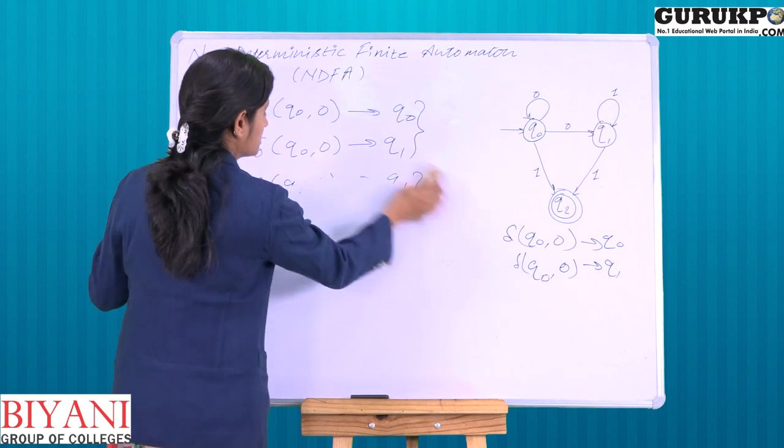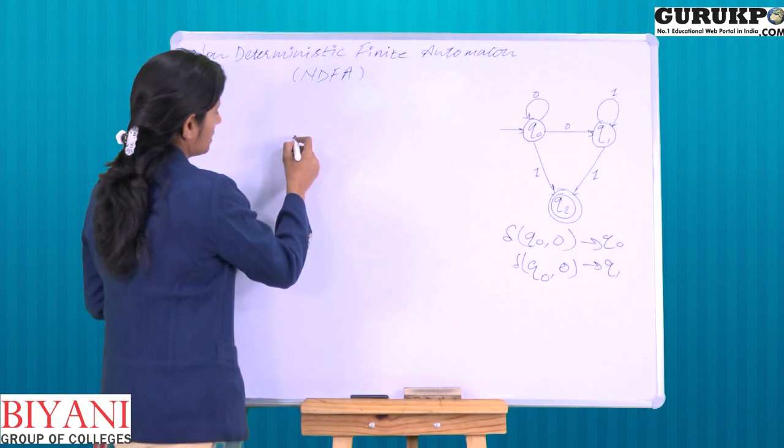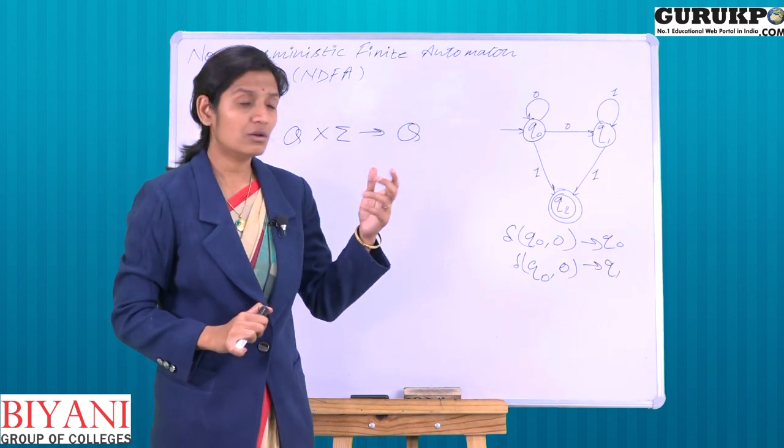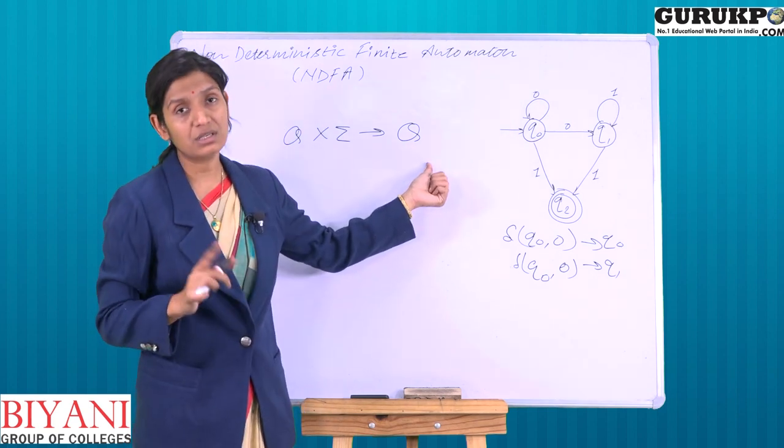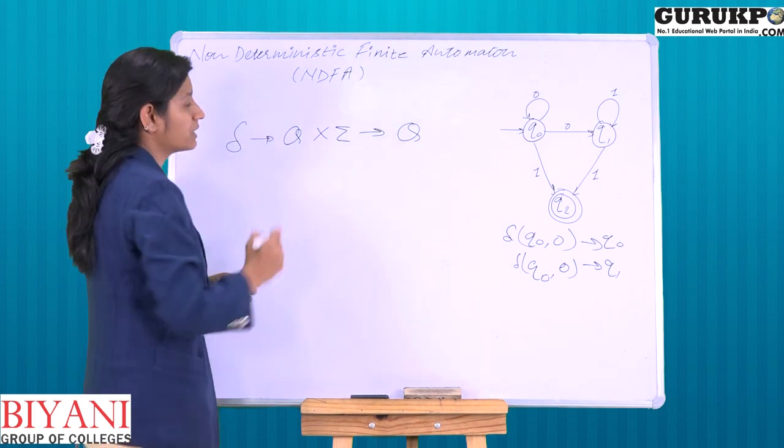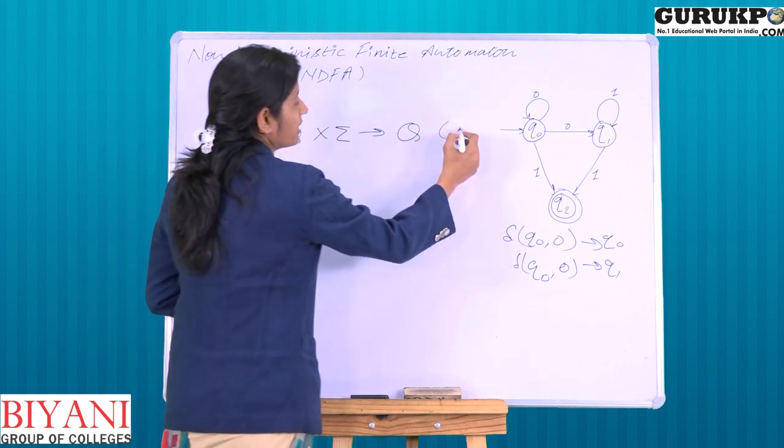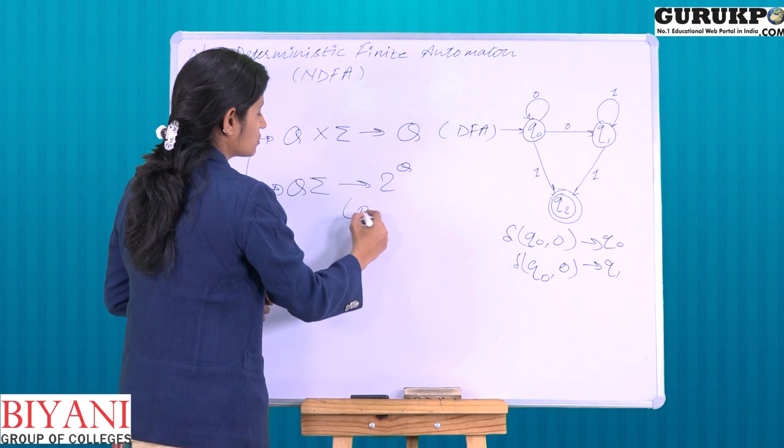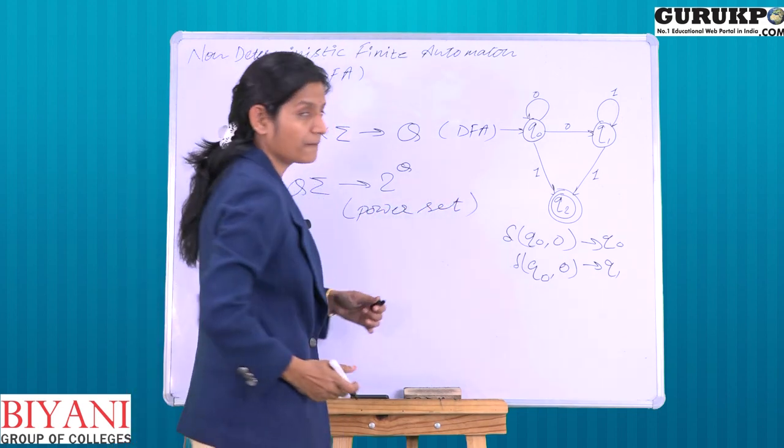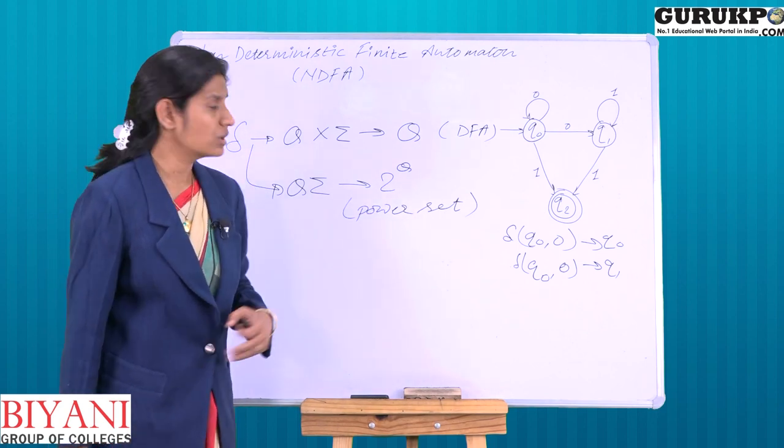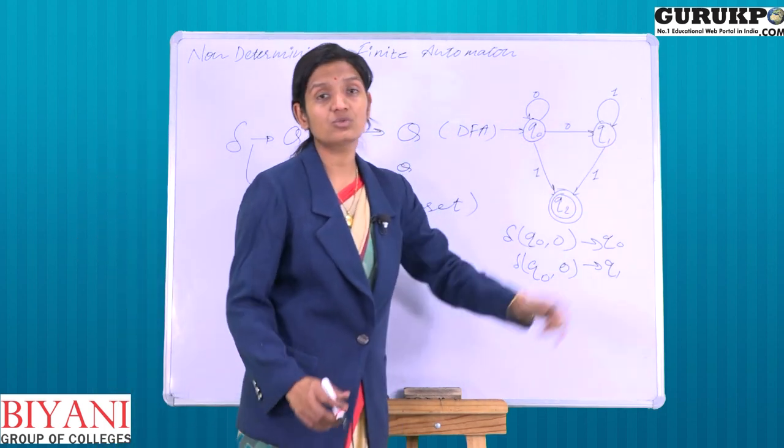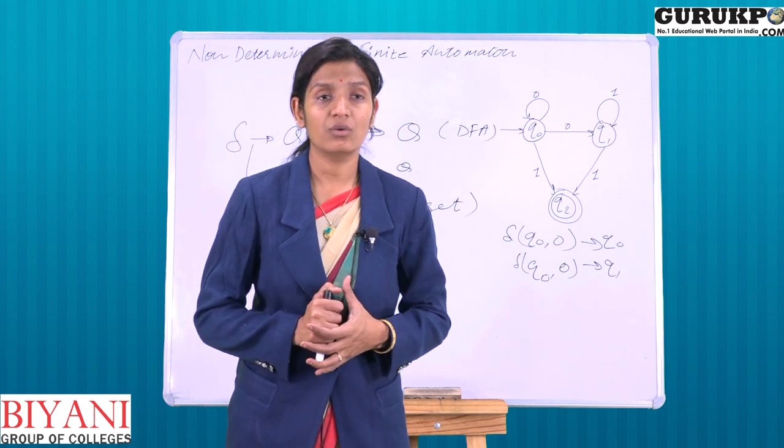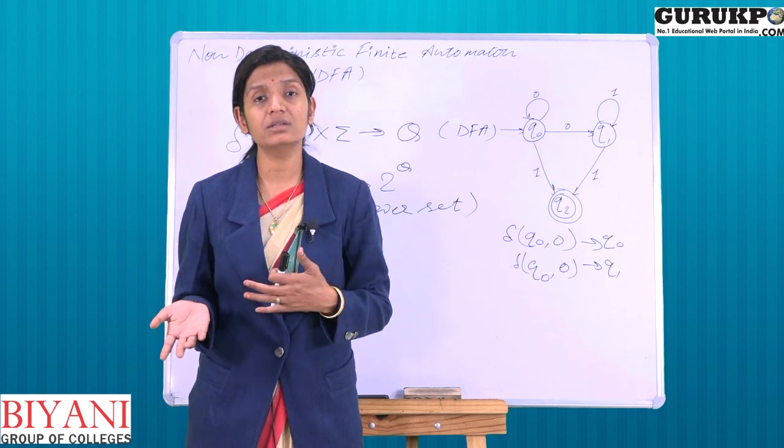When we wrote DFA, the transition function was Q cross summation going to Q, meaning we were getting one state. But when we write the transition function for NDFA, this is 2 to the power Q, which is also a power set of Q. Power set means set of all the subsets of Q. So why this is so? Because we are getting more than one option to move to the next state. So this is the basically major difference between DFA and NDFA.